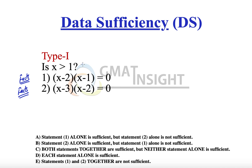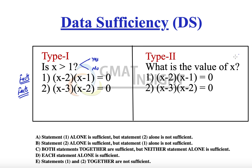This is a typical question which needs to be answered in the form of either yes or no. I've categorized it as a Type 1 question, because data sufficiency questions always come in two possible formats: Type 1 and Type 2. Type 1 requires an answer in the form of yes or no, while Type 2 questions ask something like 'what is the value of x?' — meaning we must find a unique value of that unknown variable.